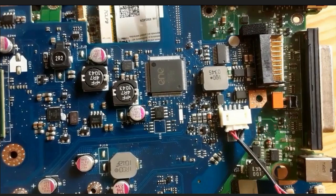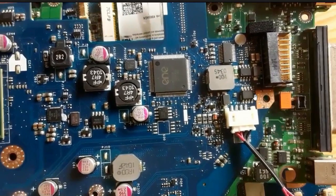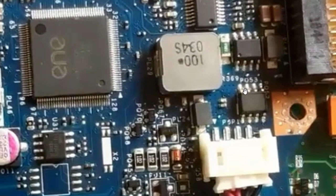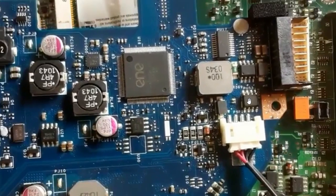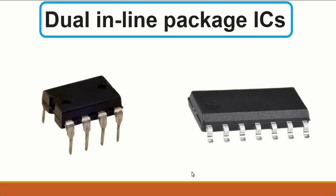Always you should differentiate between ICs and MOSFETs. For example, if we take this component, we have 'U' here, which means it is an IC. But for this one, we have 'Q' — PQ — which means this is a MOSFET. The letter designator tells you what kind of component it is.